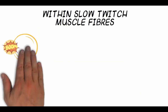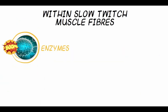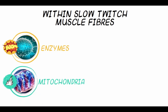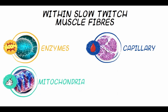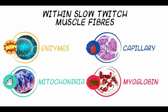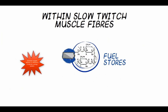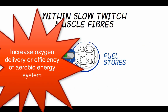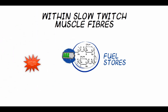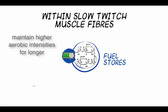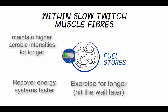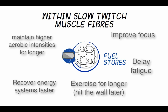Within the type 1 slow twitch muscle fibres, we find an increase in aerobic enzymes, mitochondria density, capillary density, and myoglobin, which is responsible for the oxygen transport within the muscle cell, as well as glycogen and fat stores. Most of these result in an increase in oxygen delivery to the muscle and to the working areas within the muscle where it's needed. These adaptations allow the athlete to maintain higher aerobic intensities for longer, recover the anaerobic and aerobic systems faster, exercise for longer, and improve focus and delay fatigue.